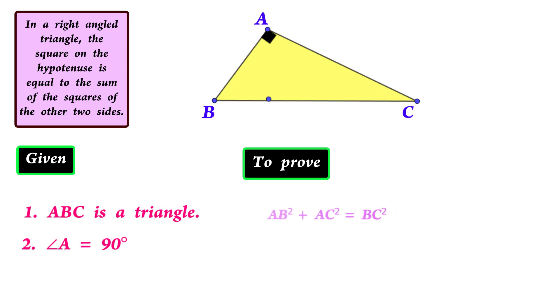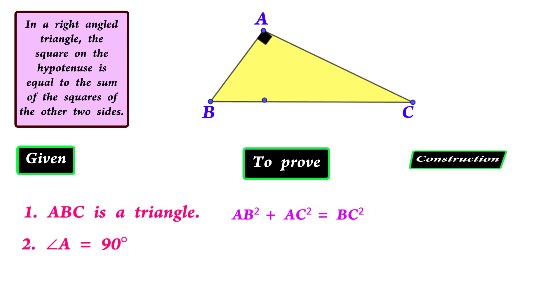But here, only one triangle is there. How is it possible? Yes, we are going to do a construction. We draw a perpendicular line from A. Now we get two more right angle triangles.